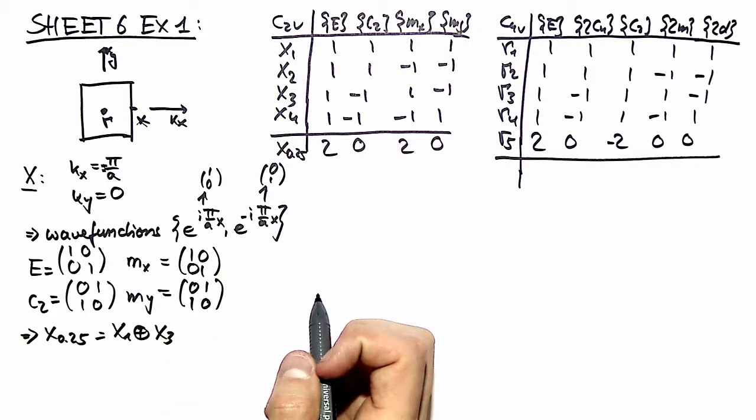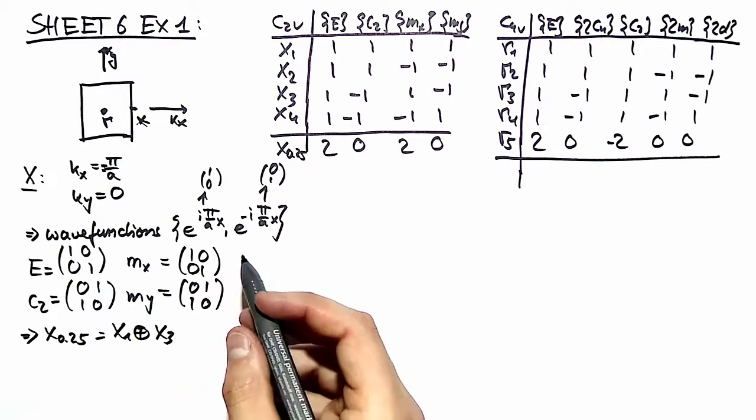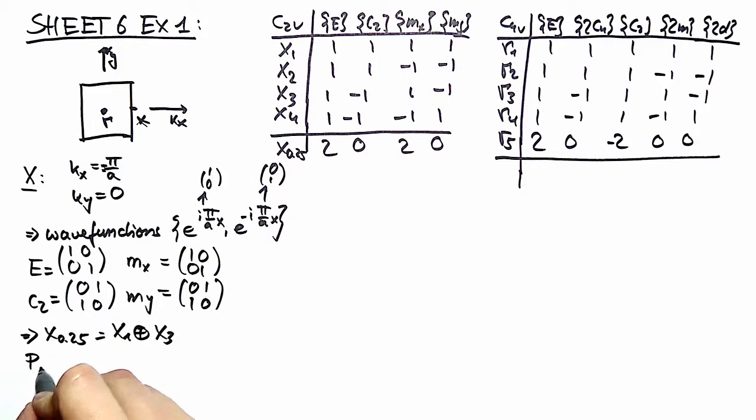To construct symmetry adapted wave functions we use the projector technique. For example, projecting our first basis vector onto the X1 irreducible representation yields us something proportional to cos(πx/a). Projecting onto X3 gives us sin(πx/a).